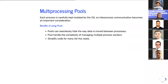Now let's discuss multi-processing pools. Pools are used when you want a pool of worker processes that you can reuse. The multiprocessing module provides a Pool object with a great API. Since each process is carefully isolated by the operating system, inter-process communication becomes important. Pools can seamlessly hide the way data is transported between processes, making it simple to pass information between the parent process and child processes.